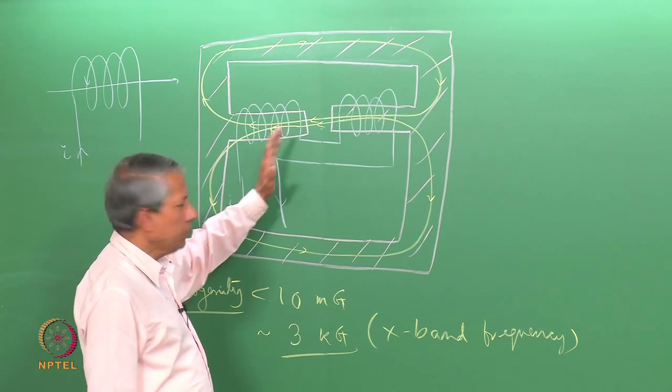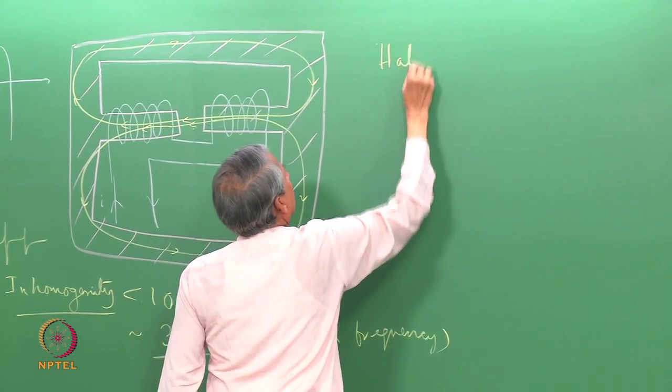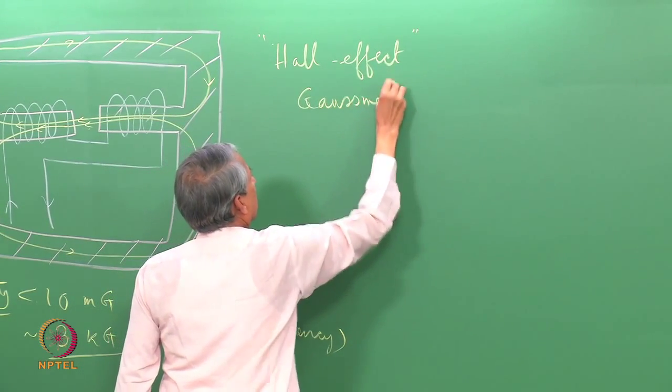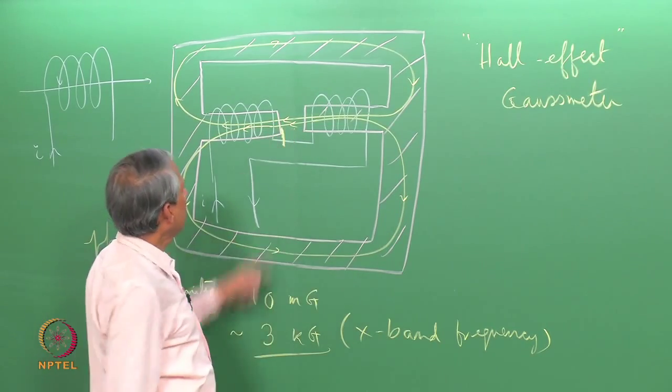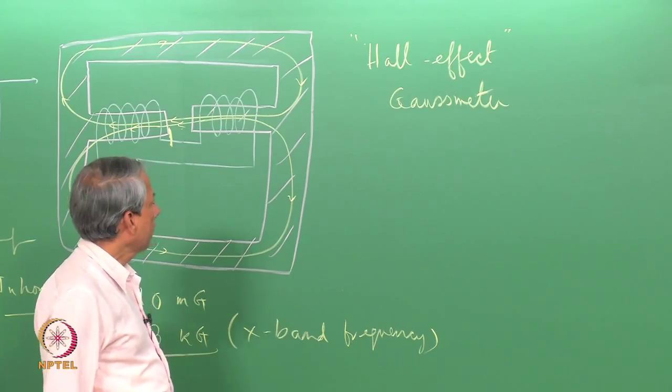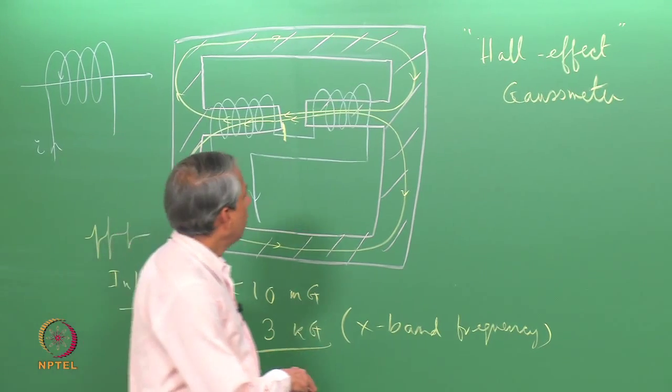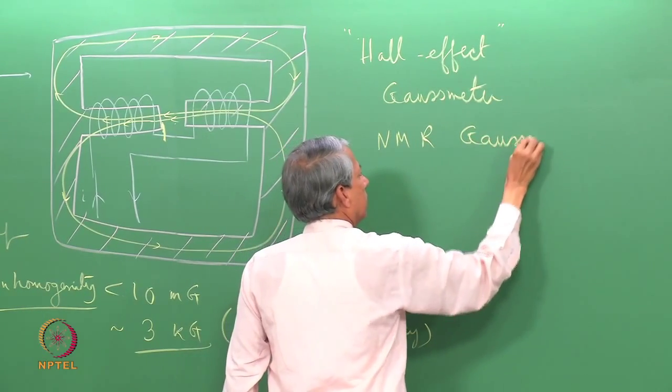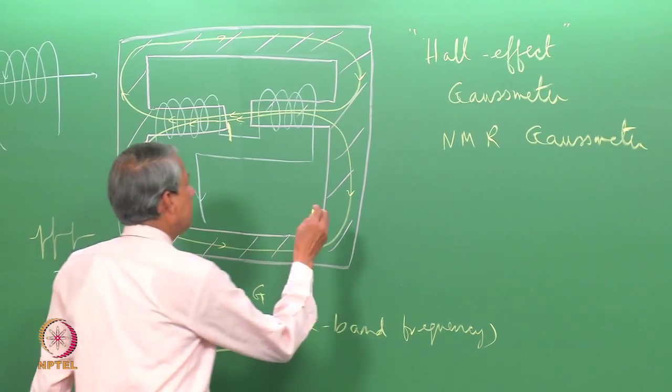Now, how to measure the magnetic field very precisely? Usually one uses a gaussmeter which is made using the Hall effect. This Hall effect gaussmeter probe is kept somewhere here and the magnetic field can be measured. This measurement is usually good enough for common, not very precise measurements where one does not require this type of precision.